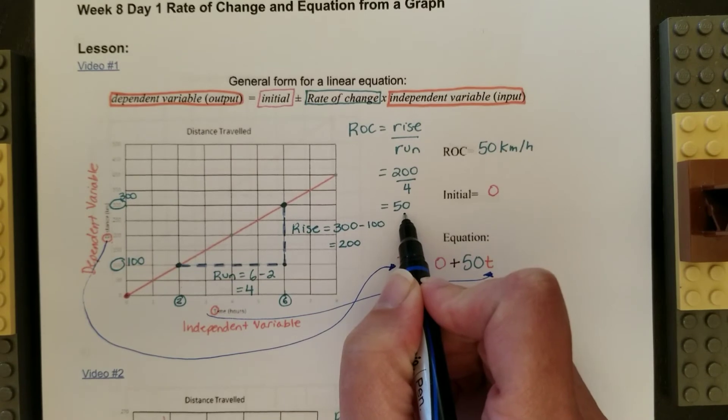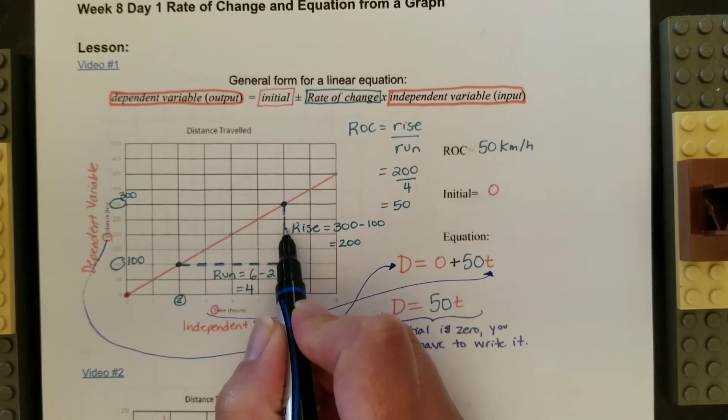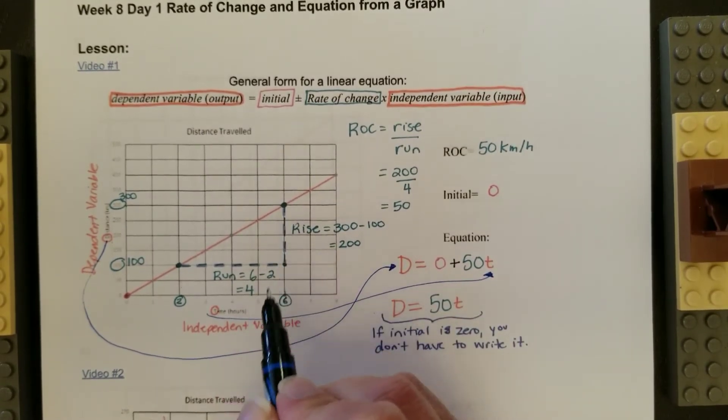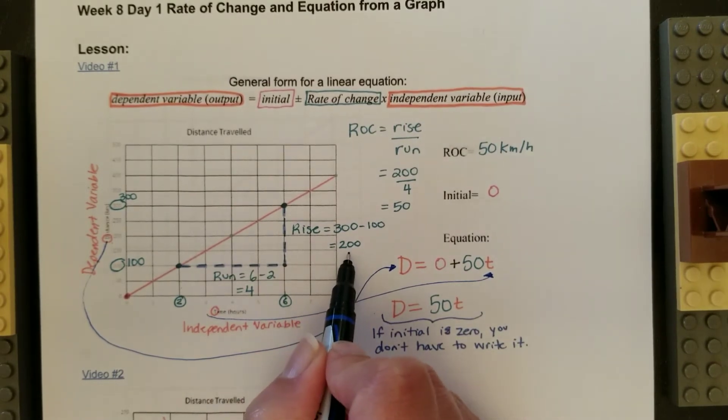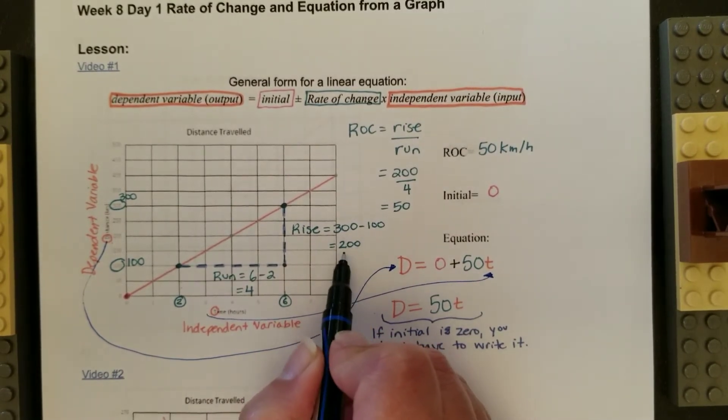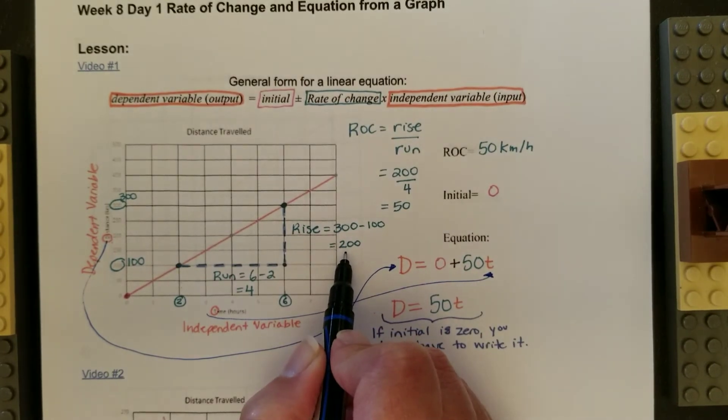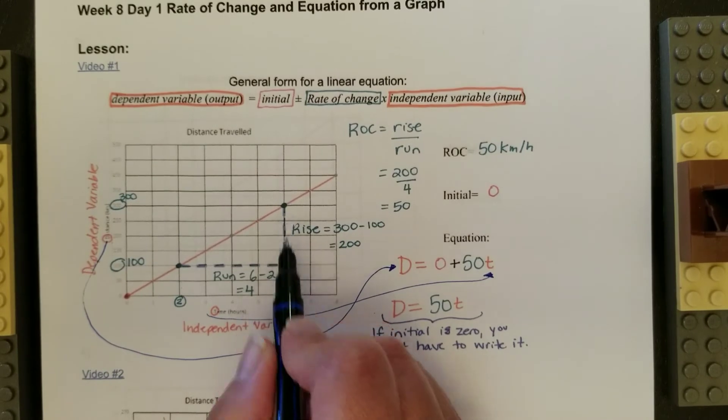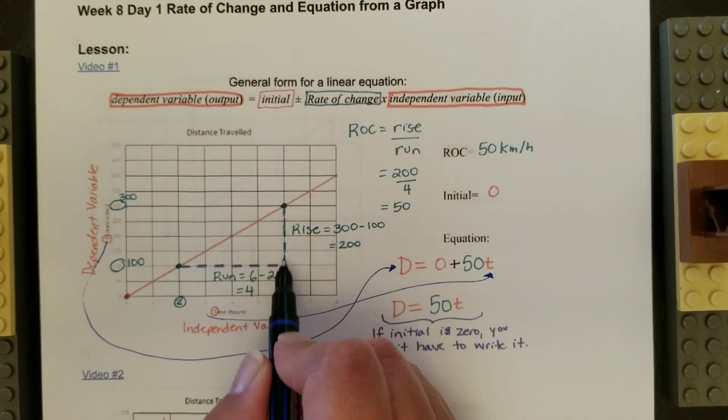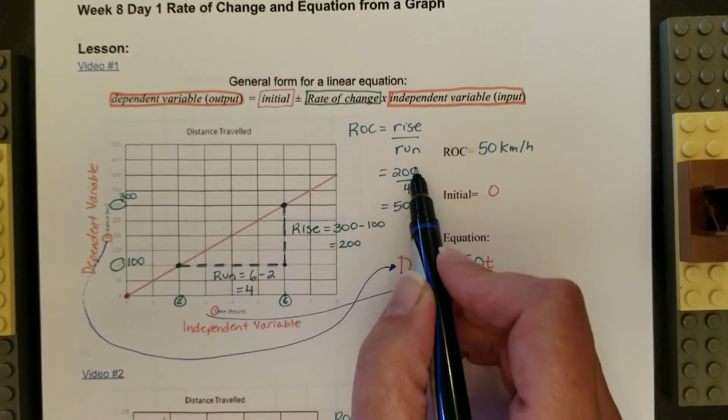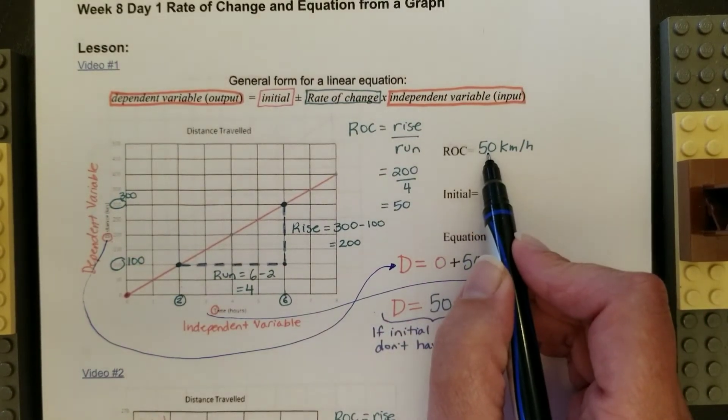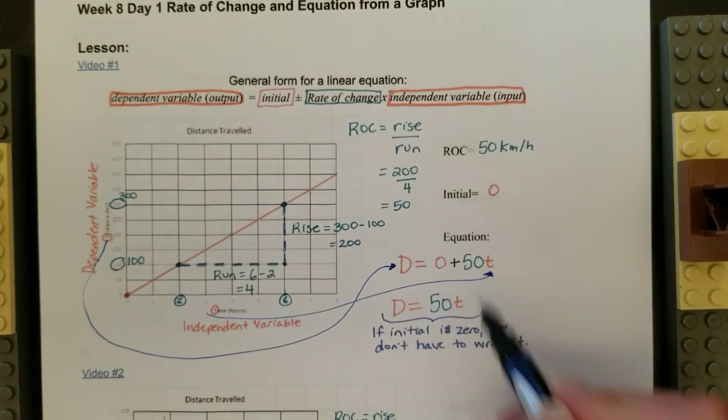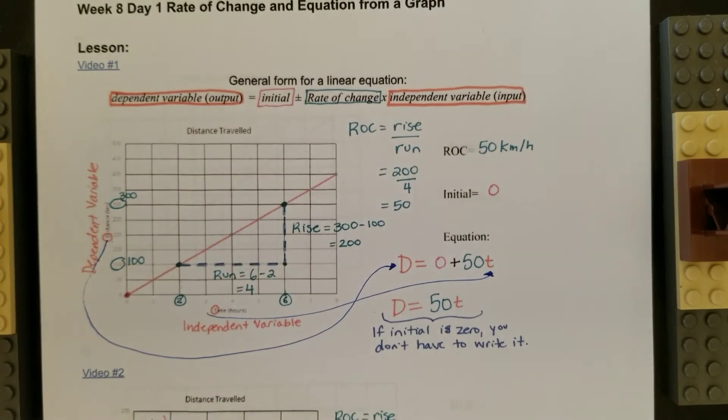So this 50 that I've calculated, it's not just the gap in the rise, and I think that was actually the problem that you'd had with those couple questions in the week seven day two, because you had just done the rise, but it's actually the whole ROC, so rise divided by run. So I do 200 divided by 4, and then the answer of that, the 50, that's what goes in the equation.